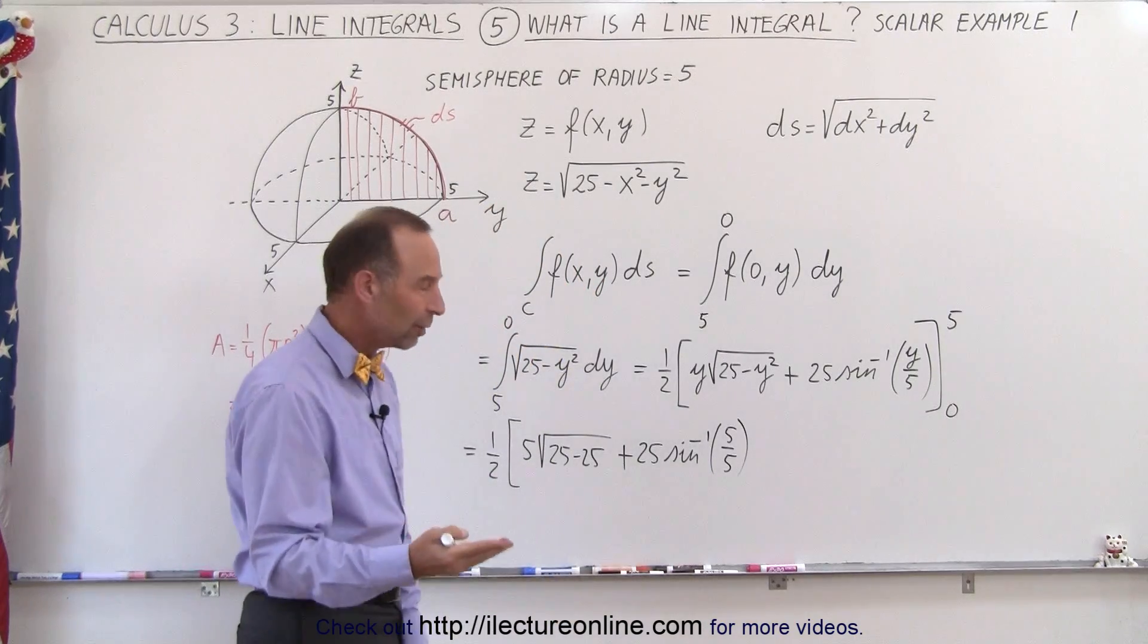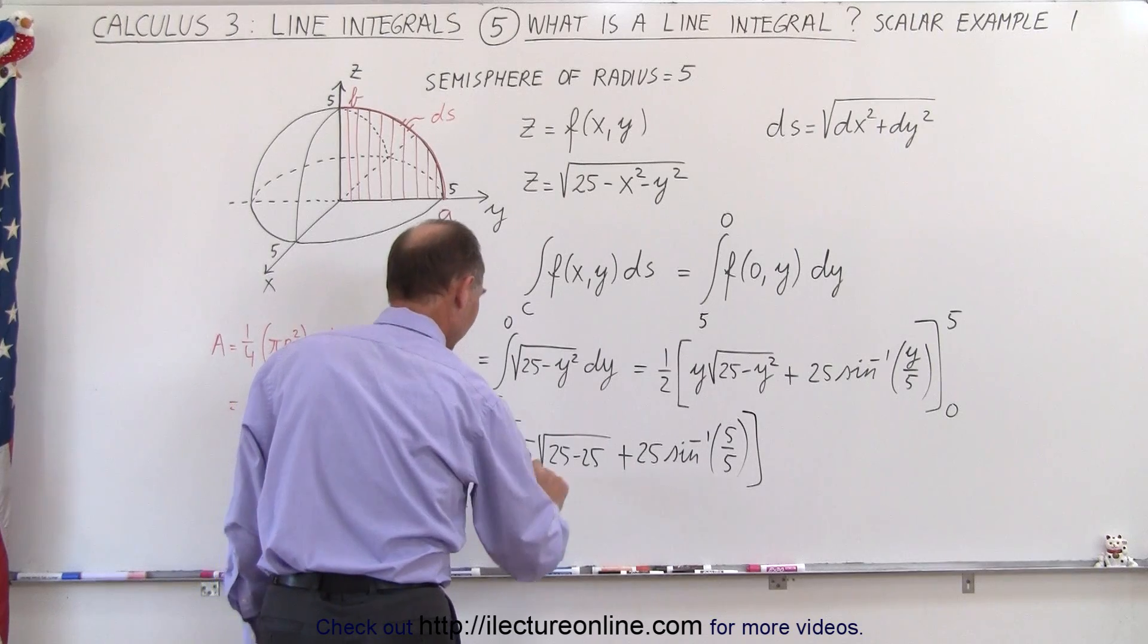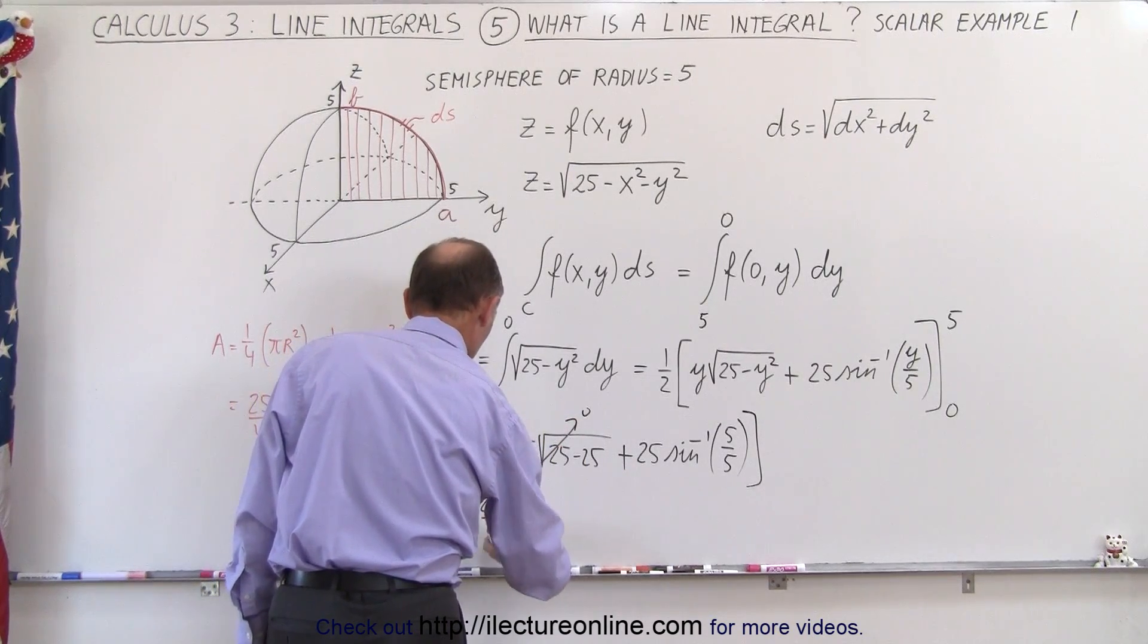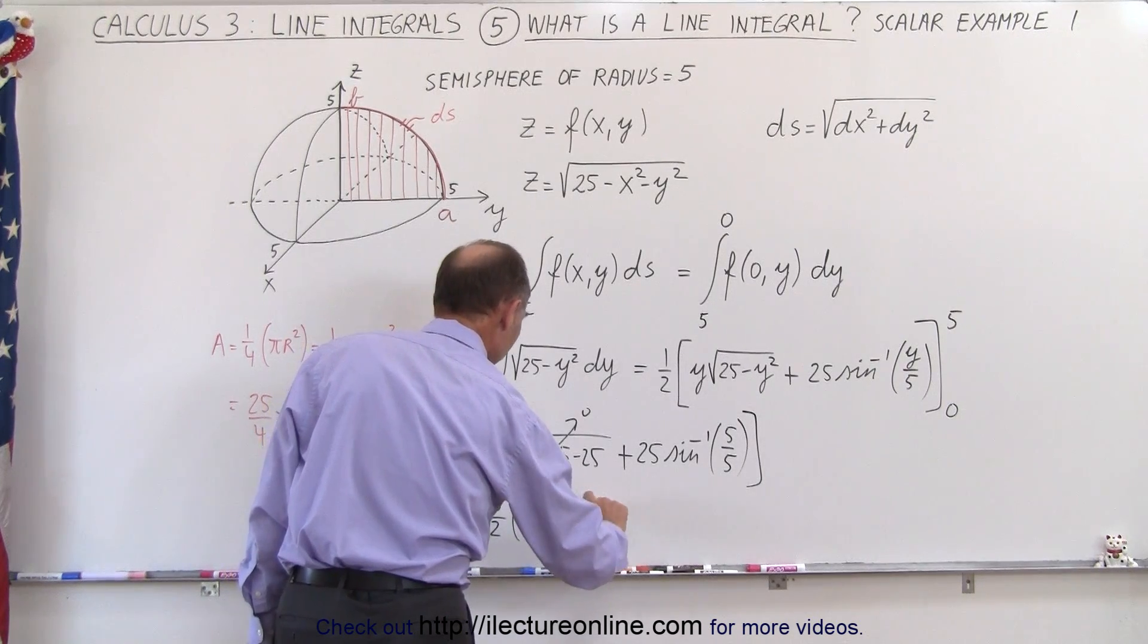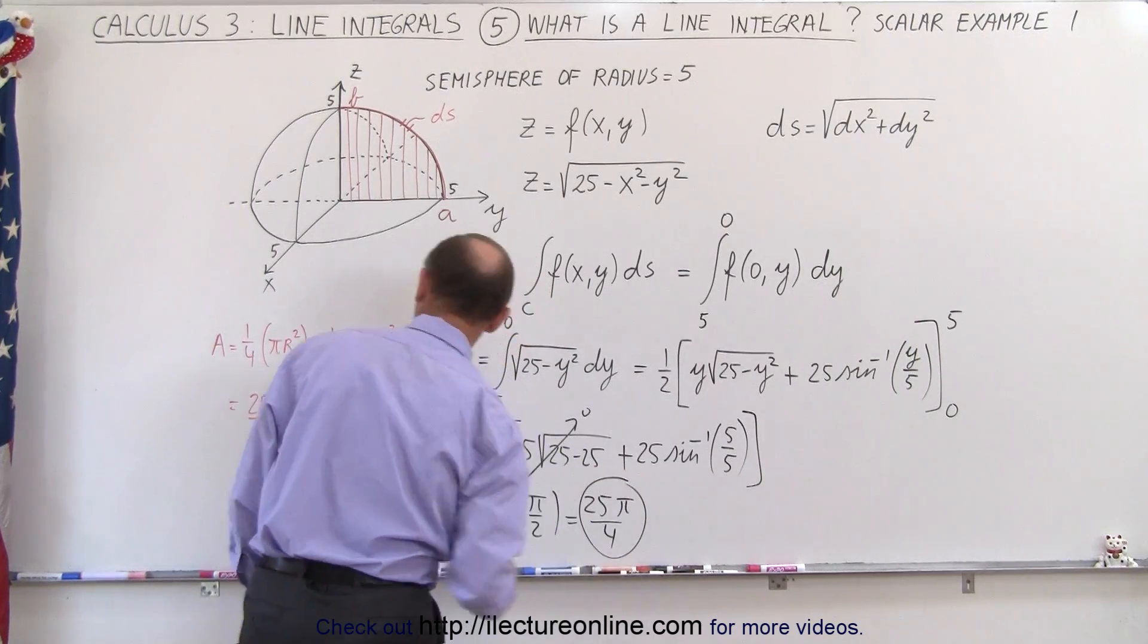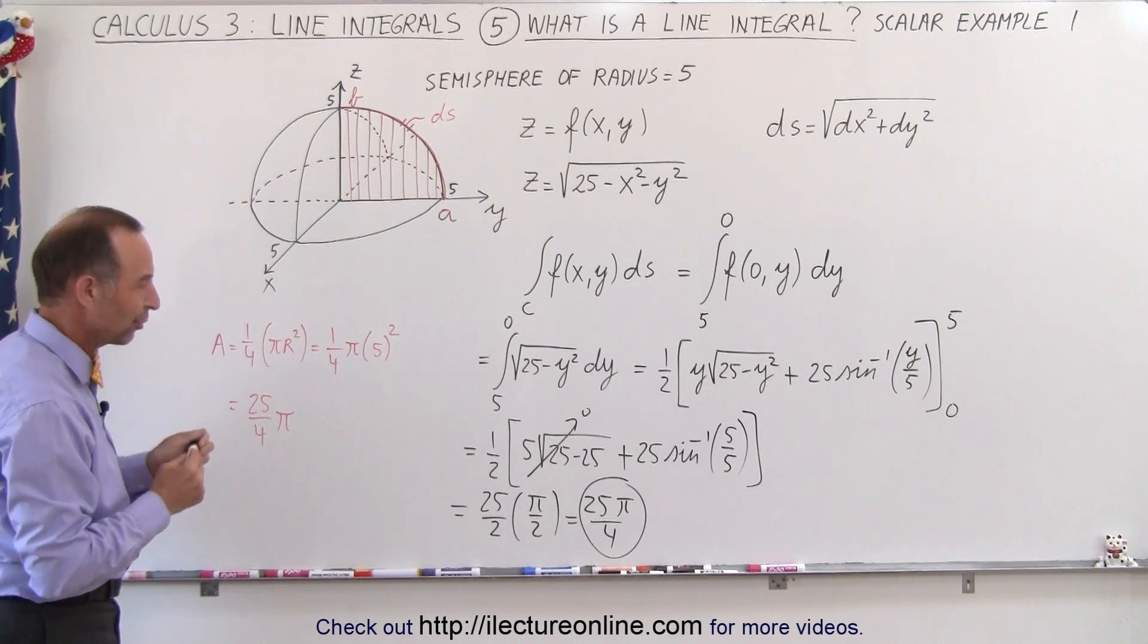Well, that would be at 90 degrees or pi over 2. So this cannot be written as, so this goes to 0. That would be 25 over 2 times pi over 2, which is equal to 25 pi over 4, which is the same result that we got here by simply calculating the area of a quarter circle.